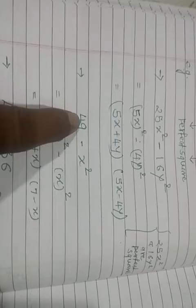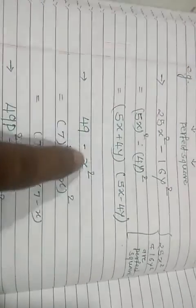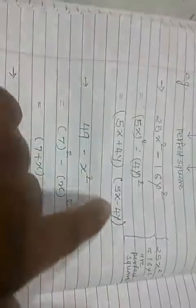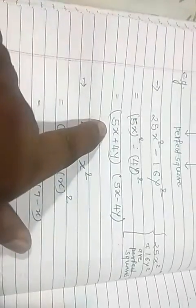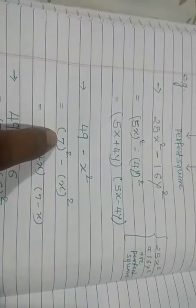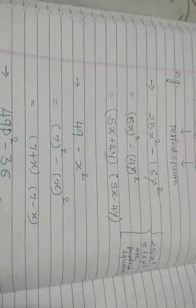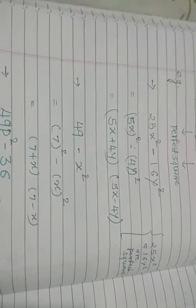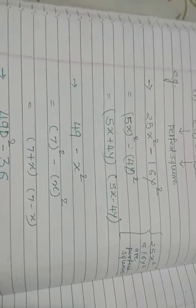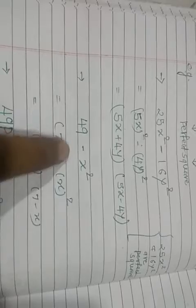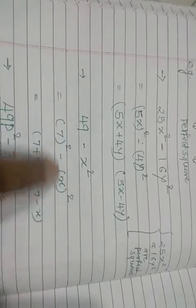Second example: 49 minus x². This is also a perfect square, this is also a perfect square. Dekho, yahan dono perfect square hoga — toh yeh possible hai; otherwise, no. 49 is a perfect square of 7, and x² means x. So, 7² minus x² = (7+x)(7-x).